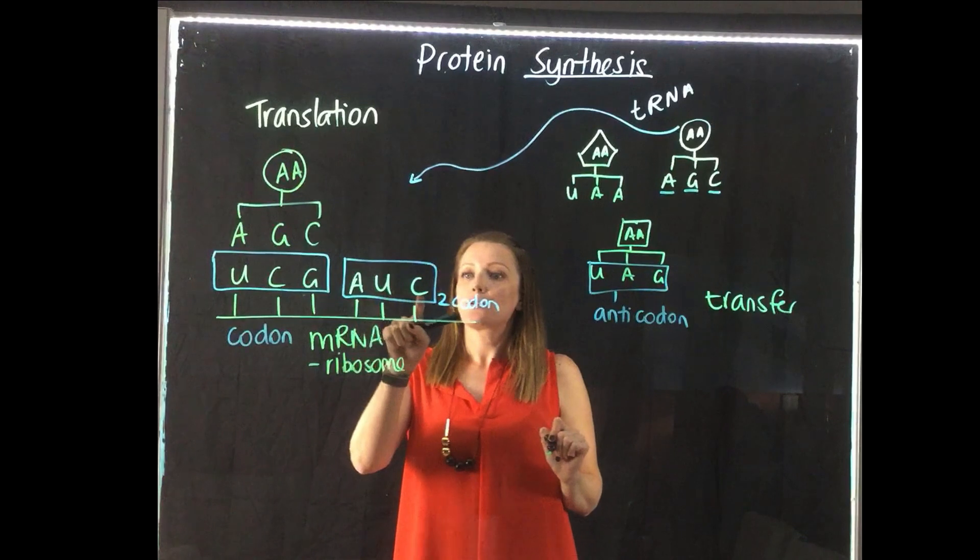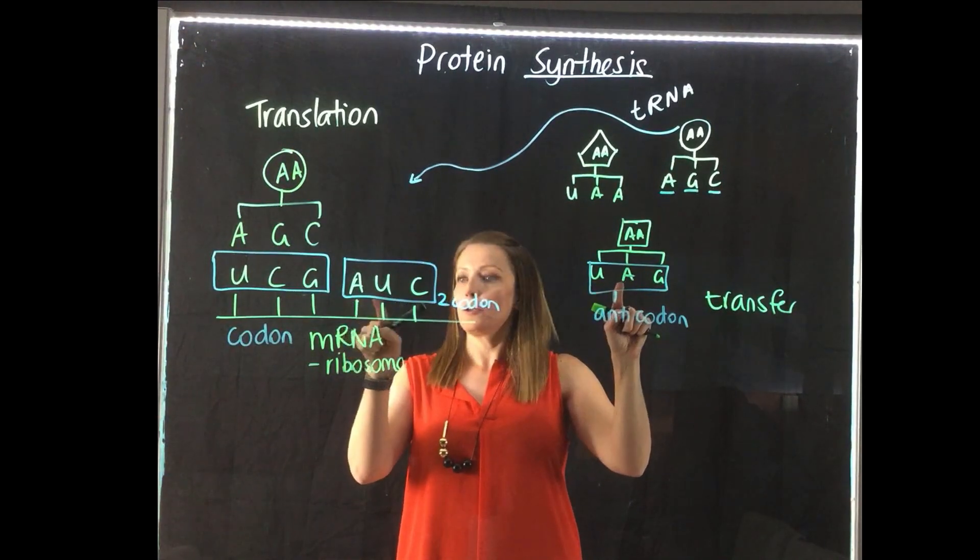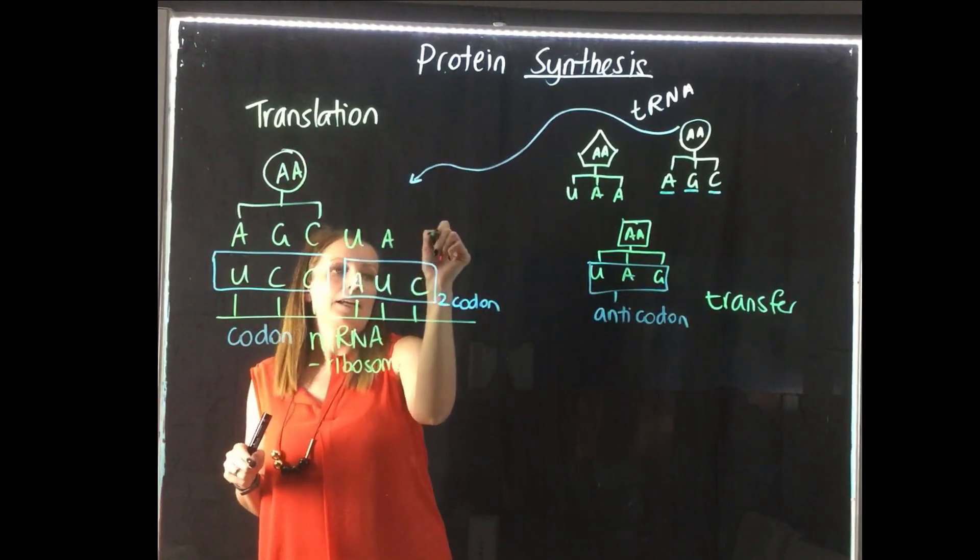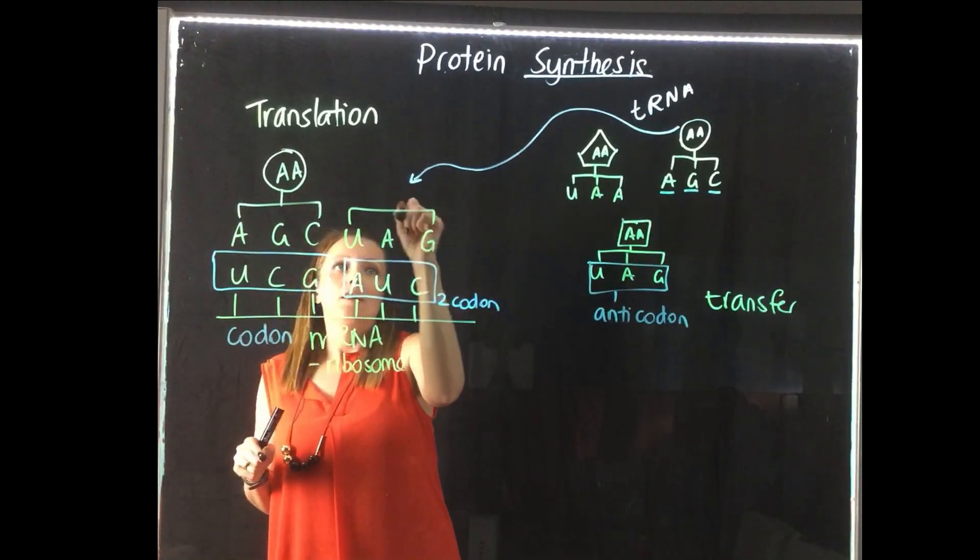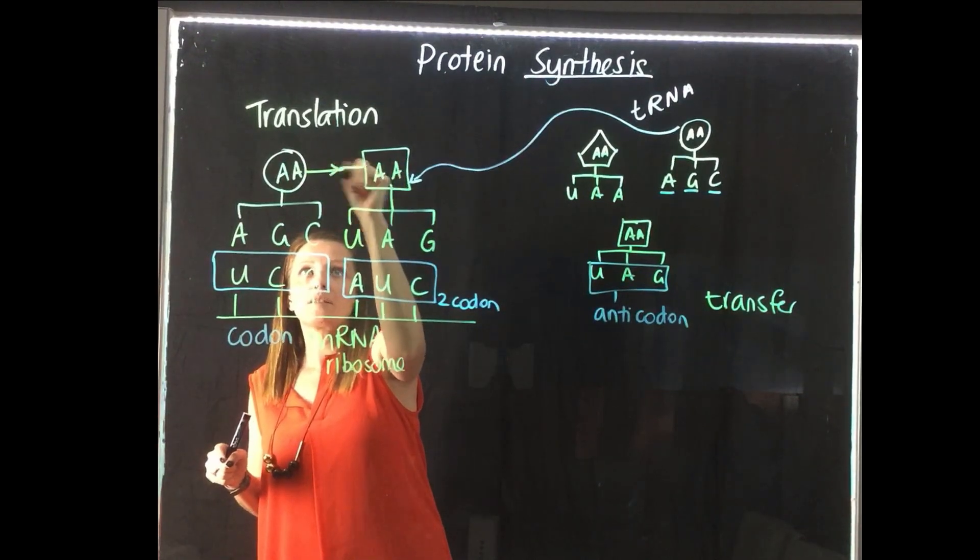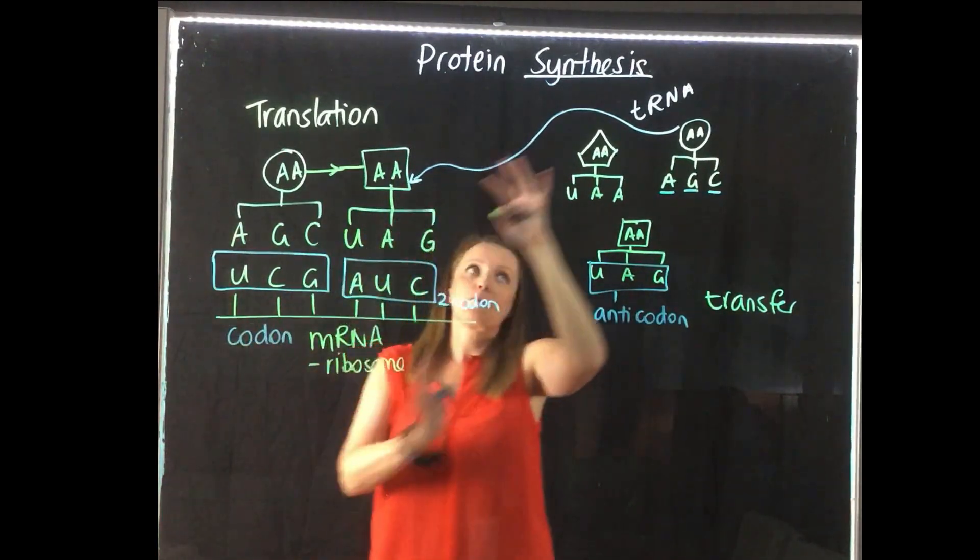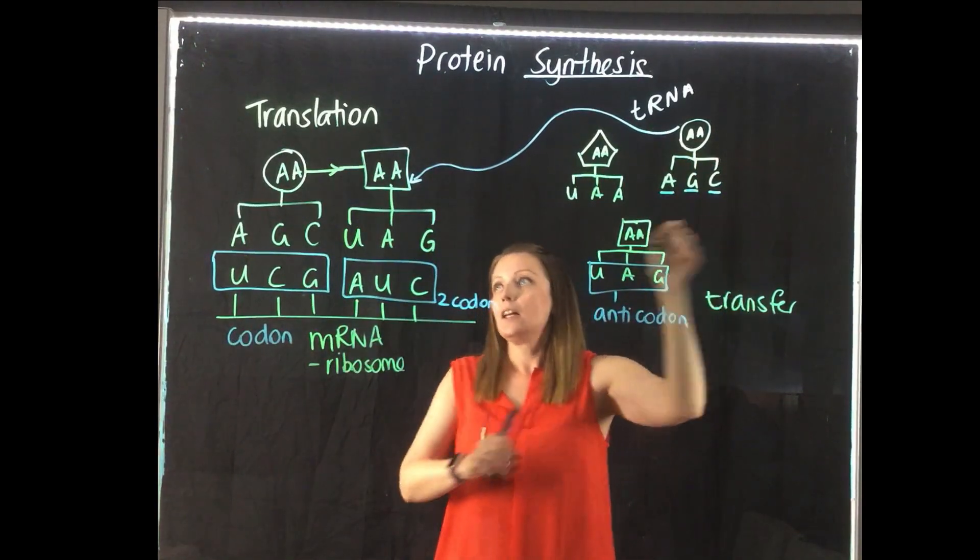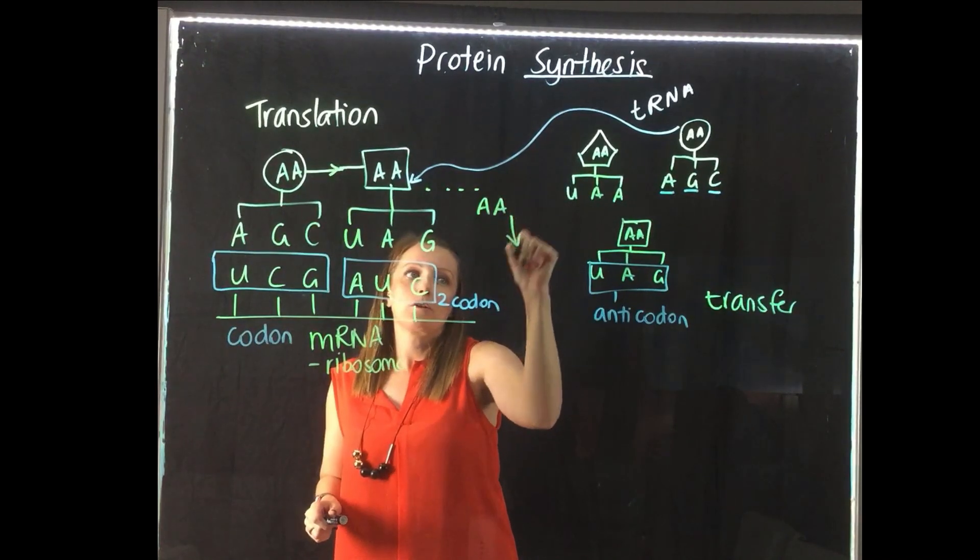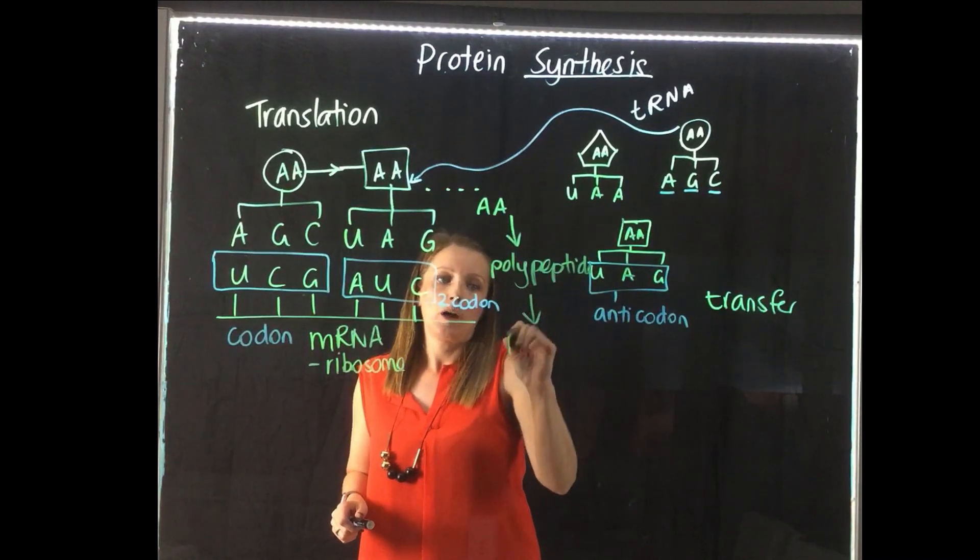Then we have AUC in our second codon, which we know A matches with U, U matches with A, G matches with C. So we would have U, A, G, and we would have this square amino acid. And what happens then is these amino acids then bond to each other. The codons go off to match up with more tRNA to be used later. And in the end, we have a sequence of amino acids, which we know is a polypeptide or a protein.